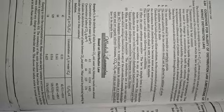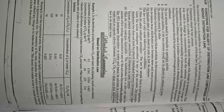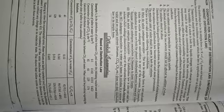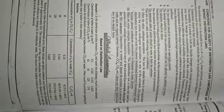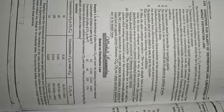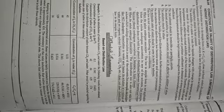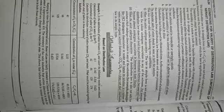Worked example based on distribution law: in the distribution of iodine between CS₂ and water, the following results were obtained. Concentration of iodine in water: 0.1, 0.161, 0.314, 0.423 g. Concentration of iodine in CS₂: 41, 66, 129, 174, respectively. Calculate the distribution constant of iodine between CS₂ and water. What would be predicted regarding the molecular state of iodine in these solvents?